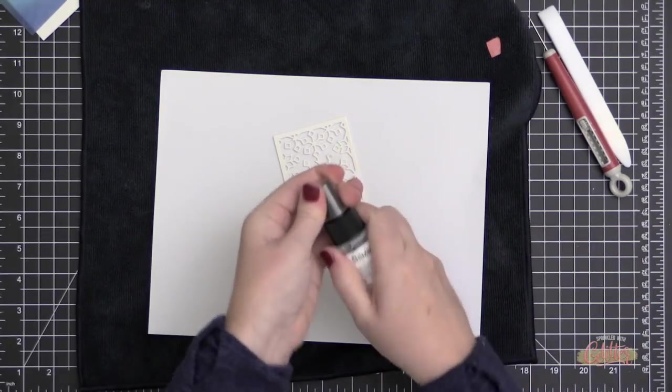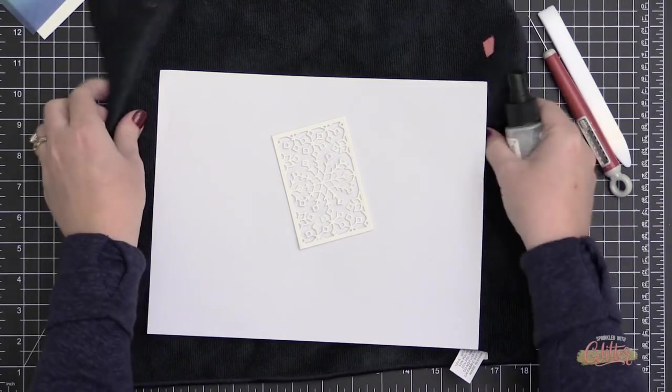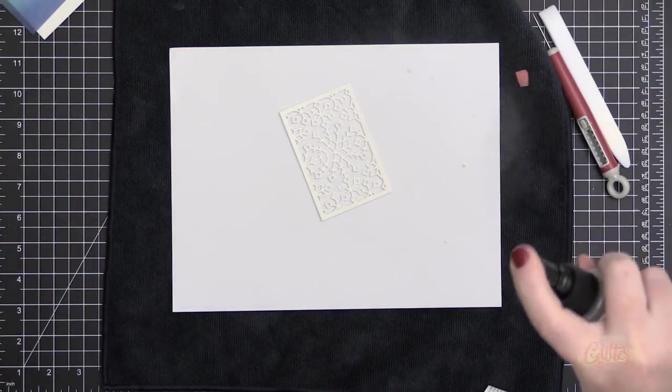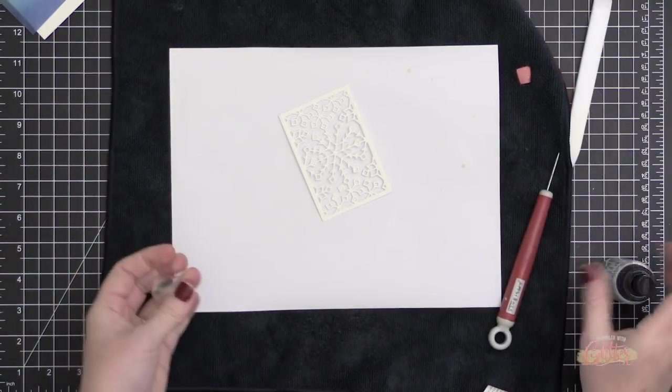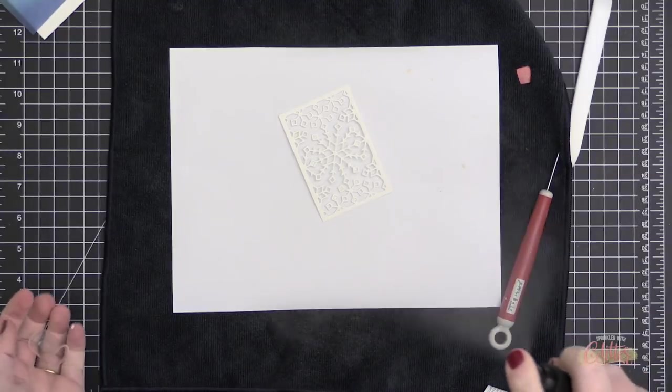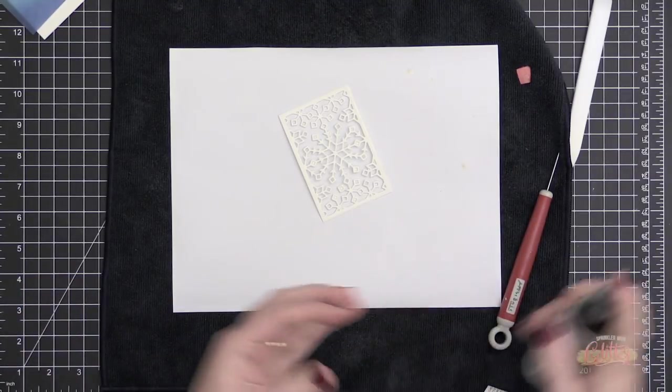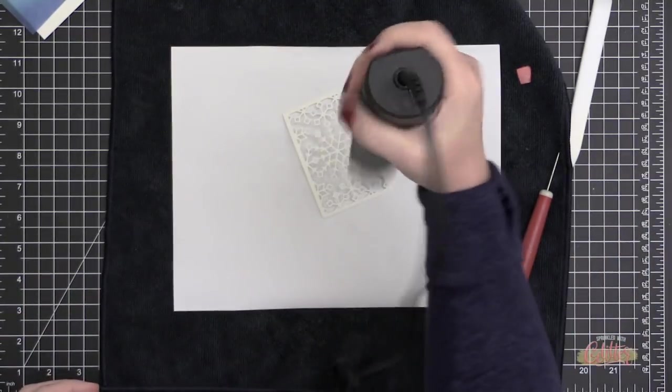Now once I have all those inside pieces popped out of this intricate die, I'm going to protect my surface and I'm using some Tsukineko Shimmer Spritz. I gave it a really good shake and I'm spraying that die cut with the shimmer spritz just to give it a little shimmer.